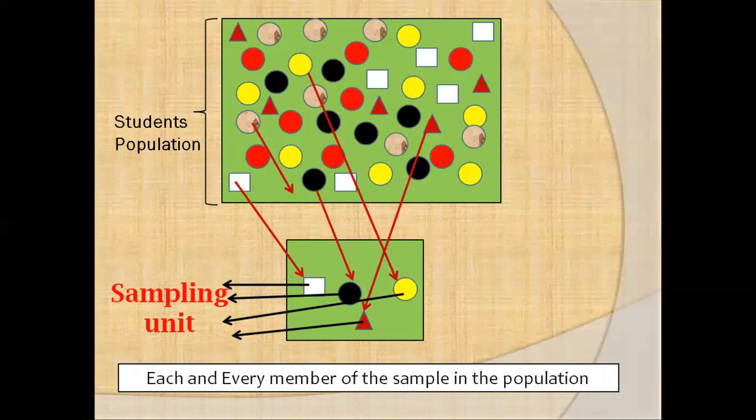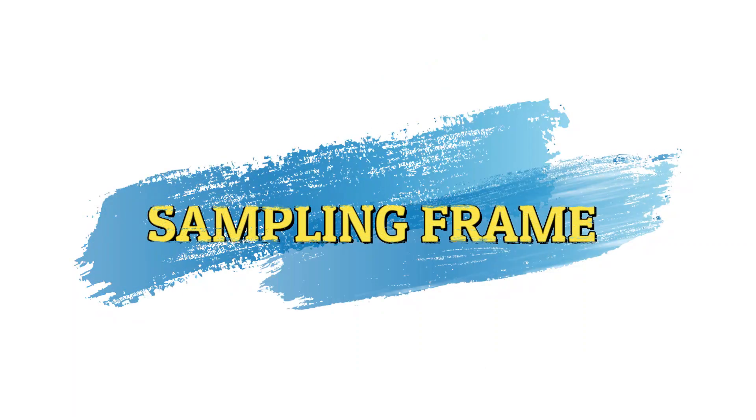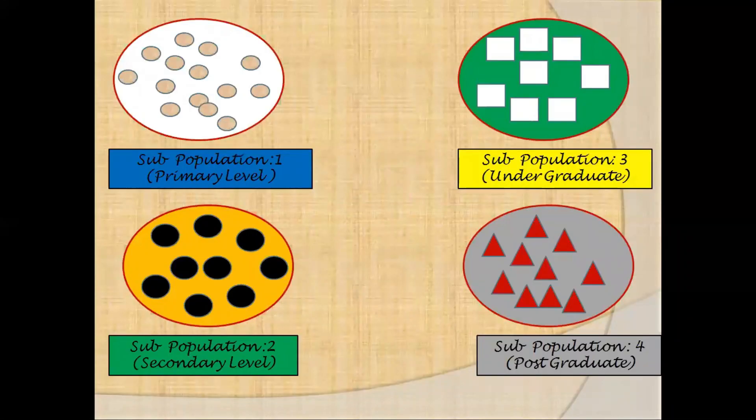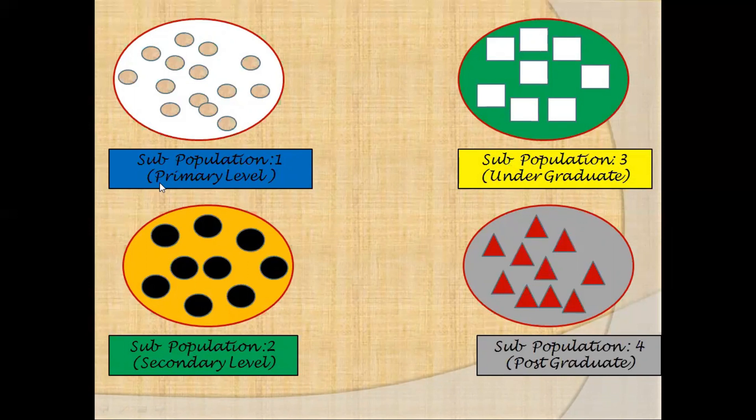Now let's see what is a sampling frame. For easy understanding of a sampling frame, let's say in our study to find the effectiveness of online classes on students learning, we divide the students population into four different sub-populations, sub-population 1, 2, 3, 4, based on the level of education: primary level, secondary level, undergraduate and postgraduate.